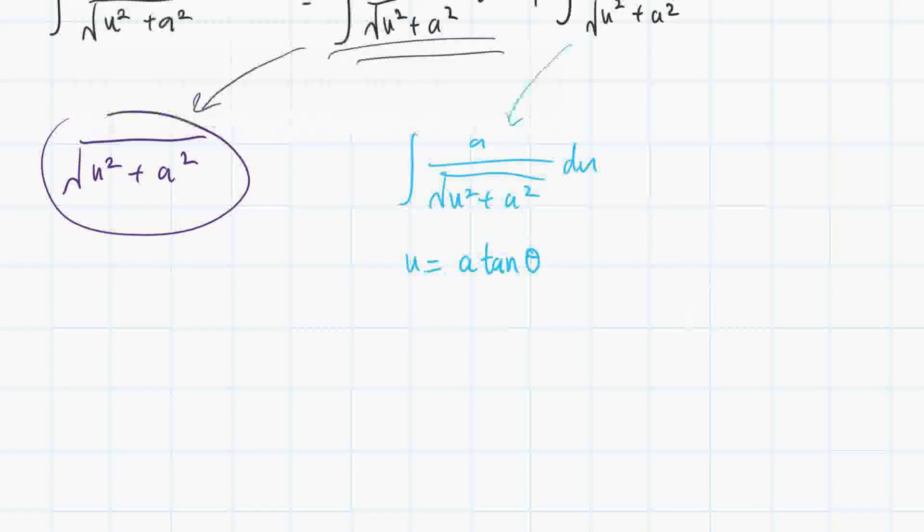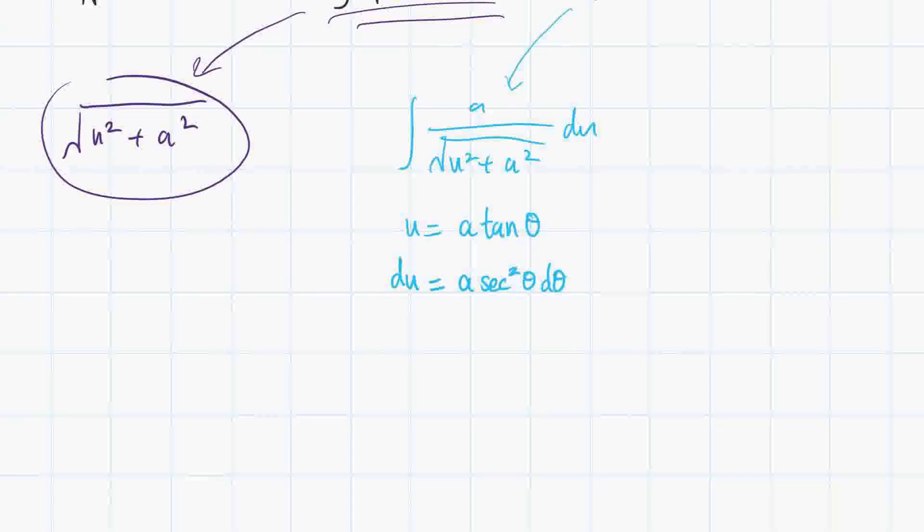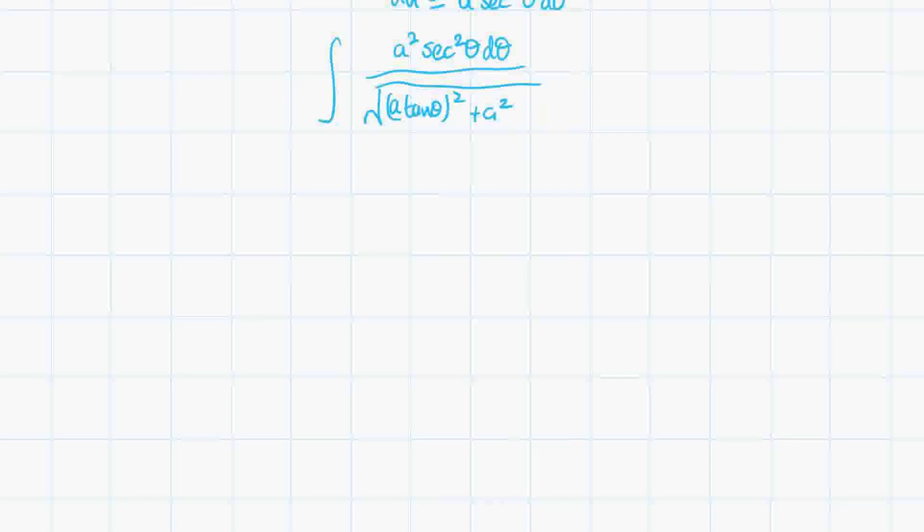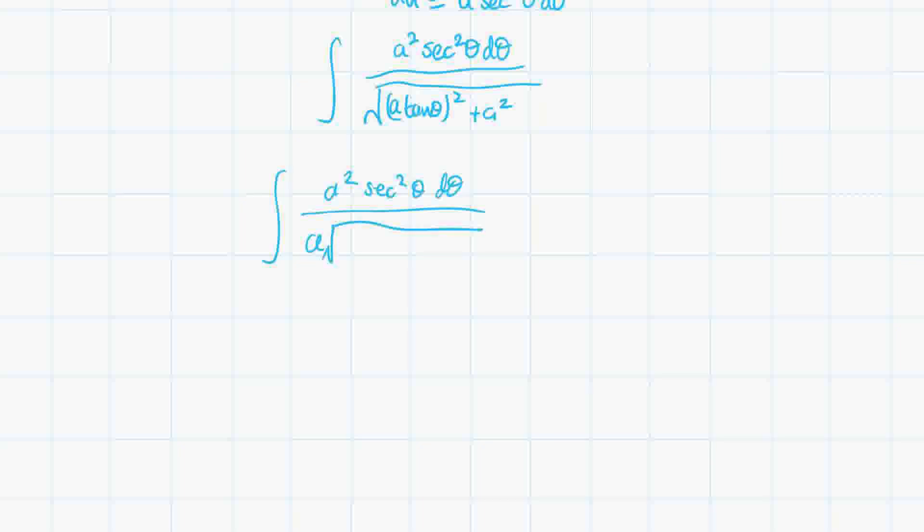Of course, we want to know what du is. du is just equal to a times the derivative of tangent of theta, which is secant squared theta d theta. Let's make this substitution now. That should be pretty easy to evaluate. We have to factor out the a squared, so it becomes a squared secant theta squared d theta over a times the square root of tangent squared theta plus 1.